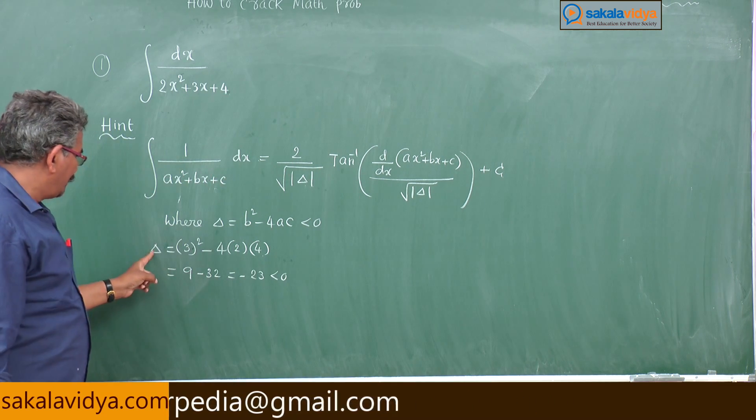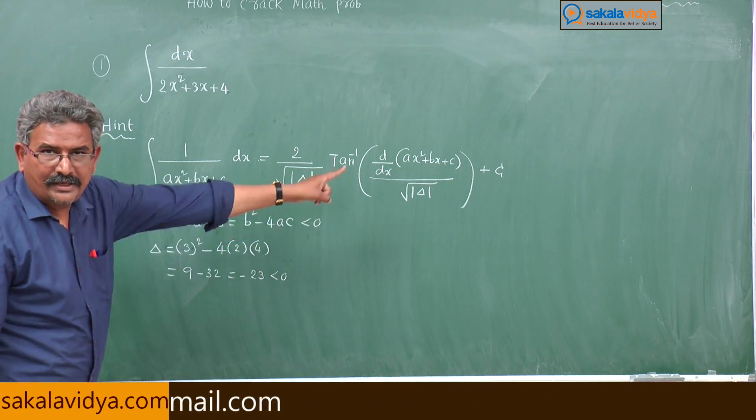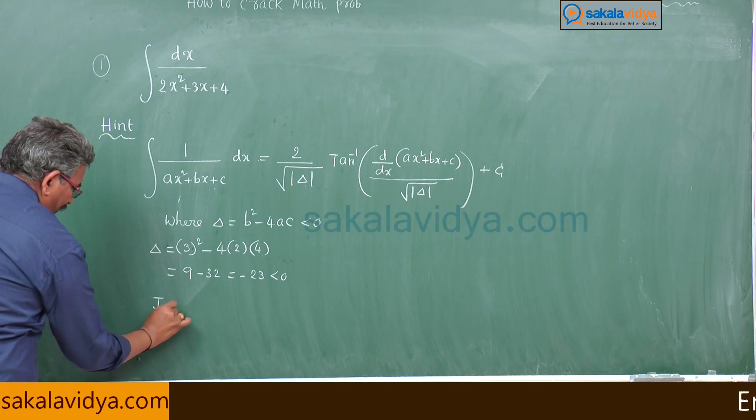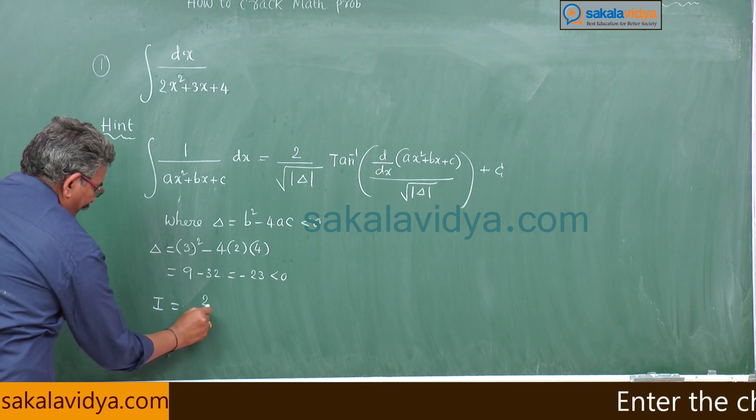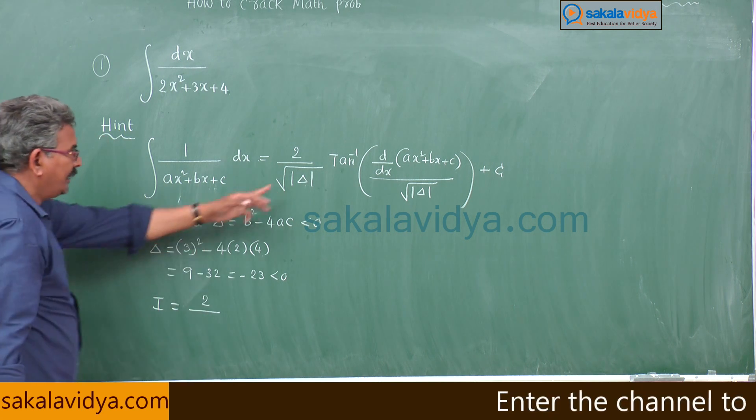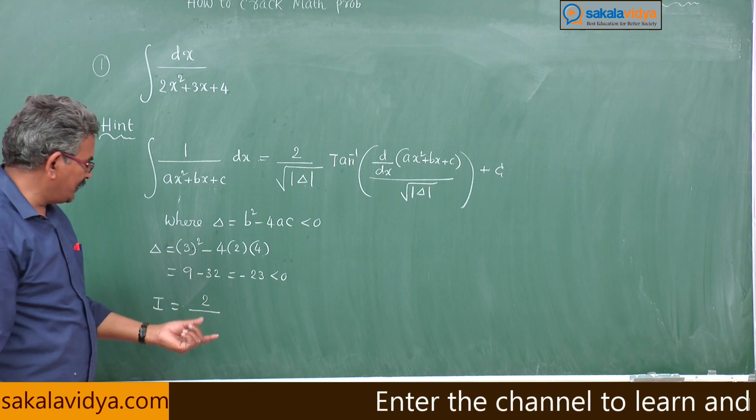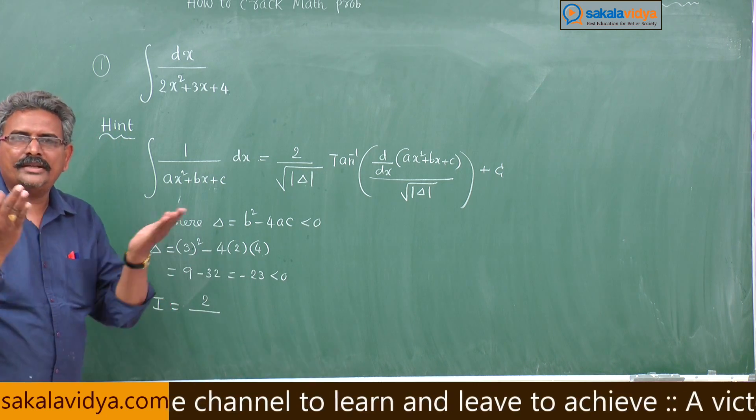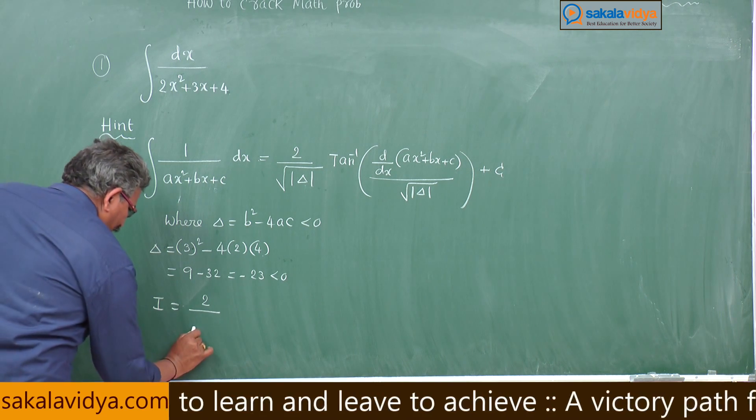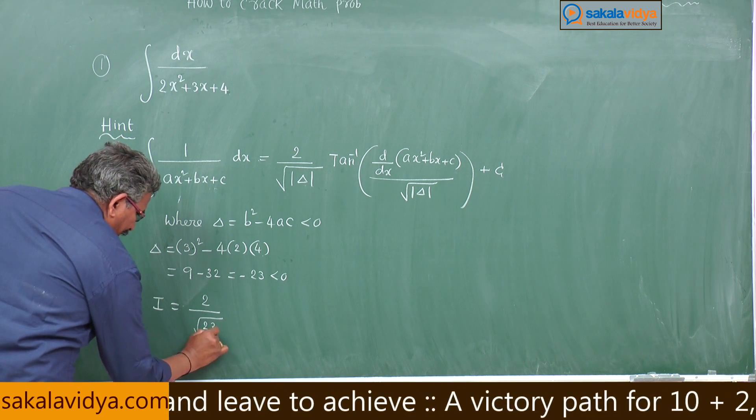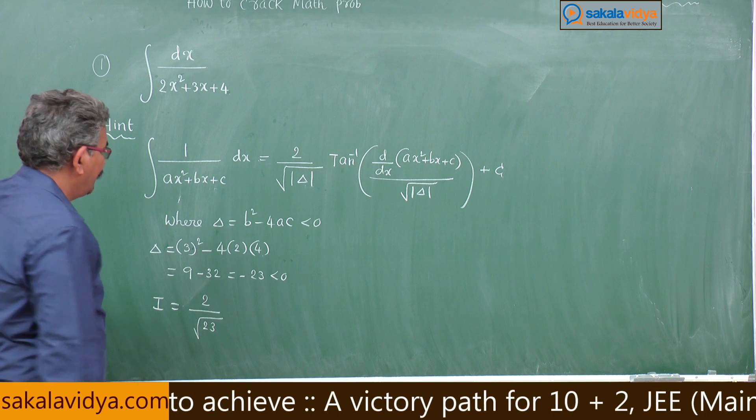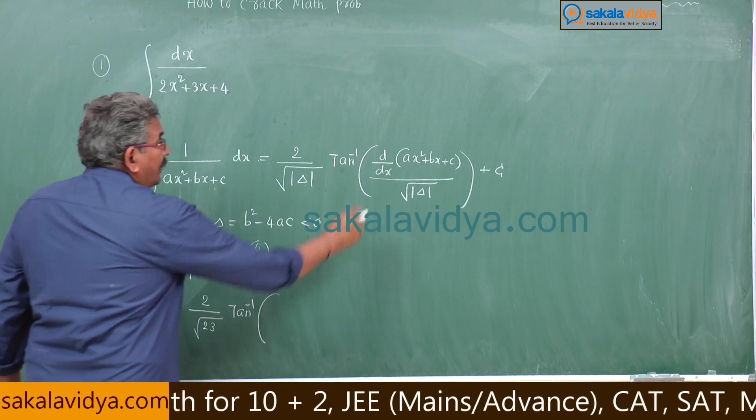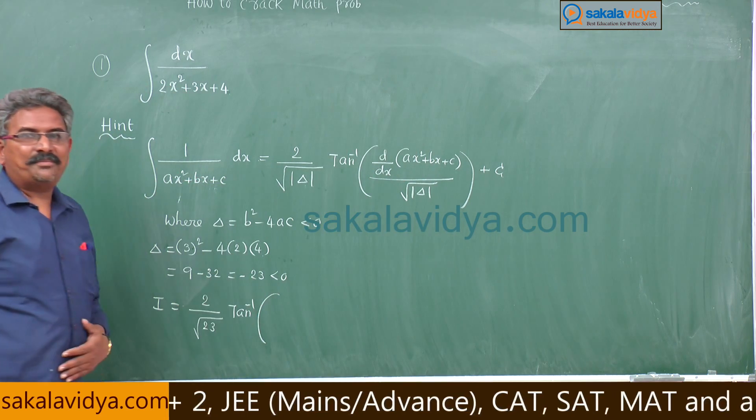Now as delta less than 0, we can apply this shortcut. I = (2/√|Δ|) tan⁻¹, modulus of delta means numerical value of delta, that is mod of -23 = 23. So 2/√23 tan inverse of derivative of ax² + bx + c...